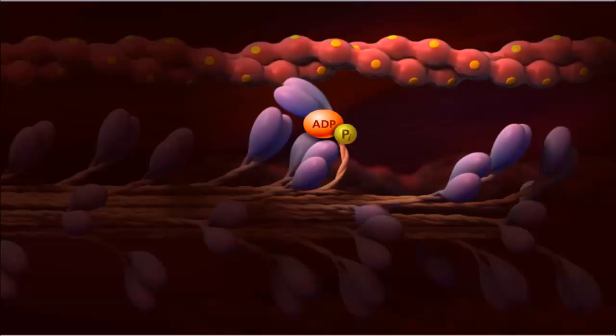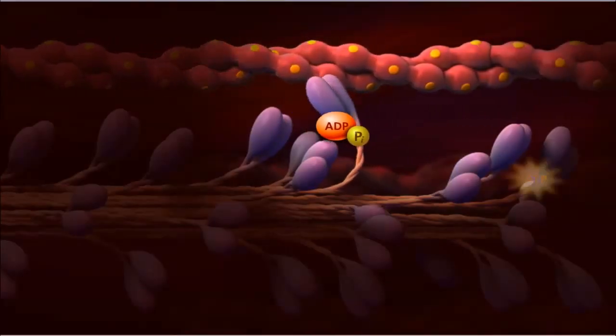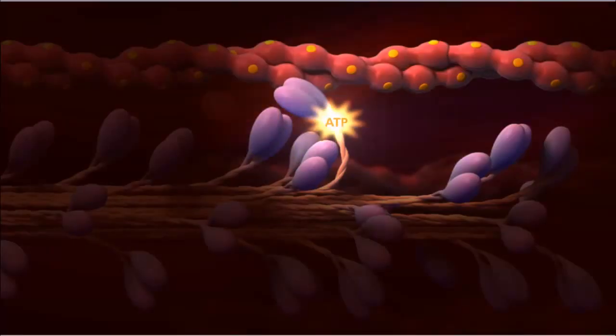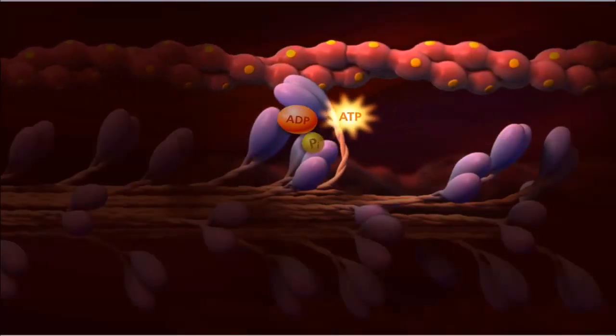ADP and inorganic phosphate are released during the power stroke. The myosin remains attached to actin until a new molecule of ATP binds, freeing the myosin to either go through another cycle of binding and more contraction or remain unattached to allow the muscle to relax.